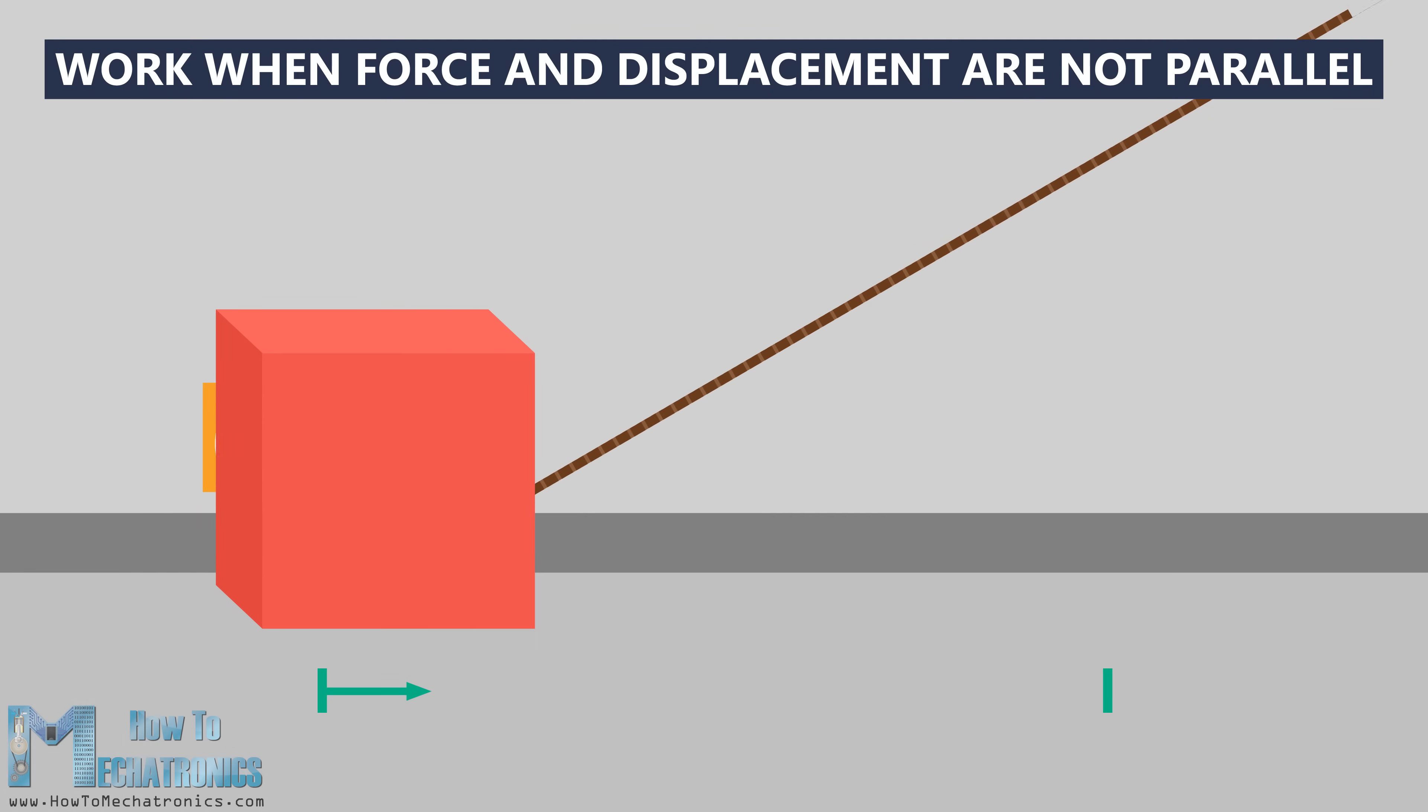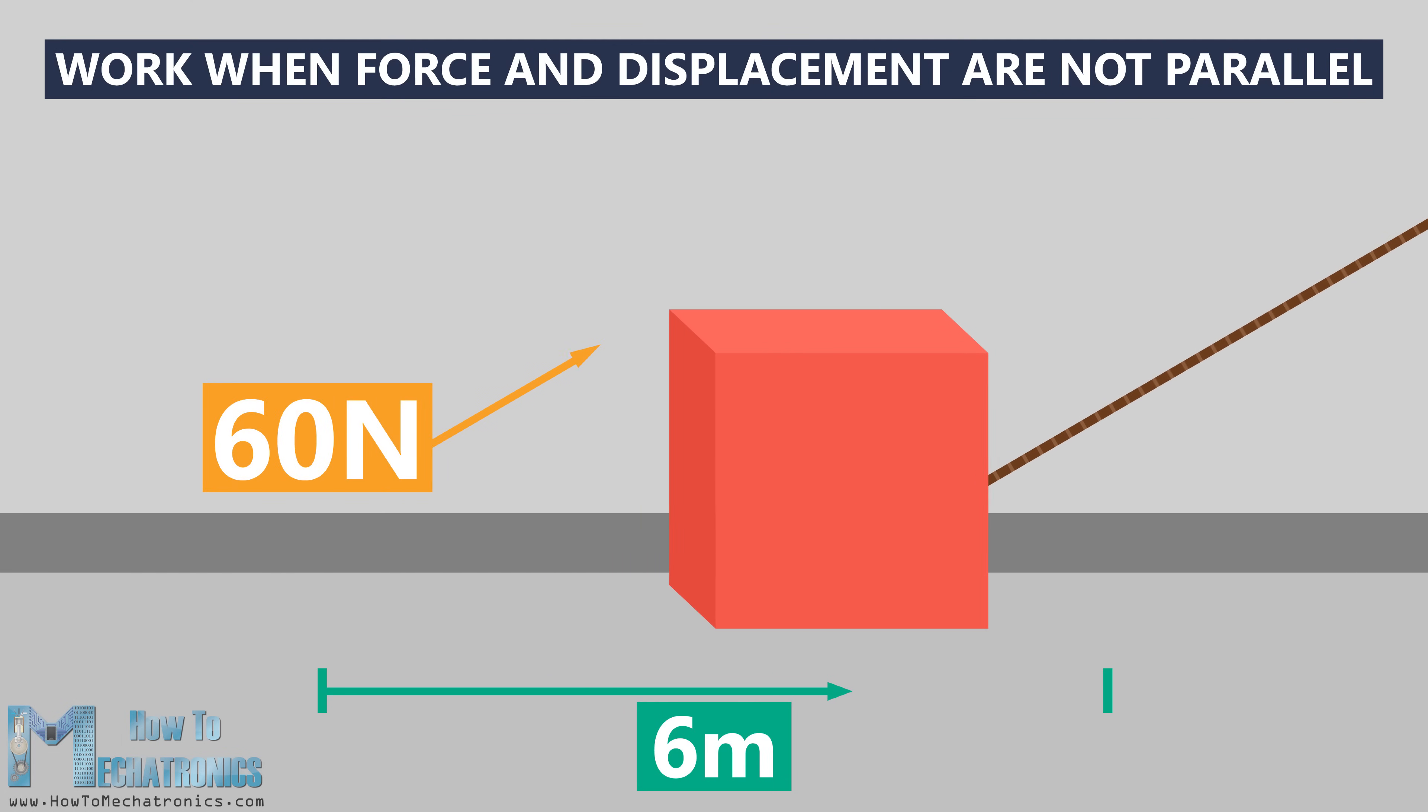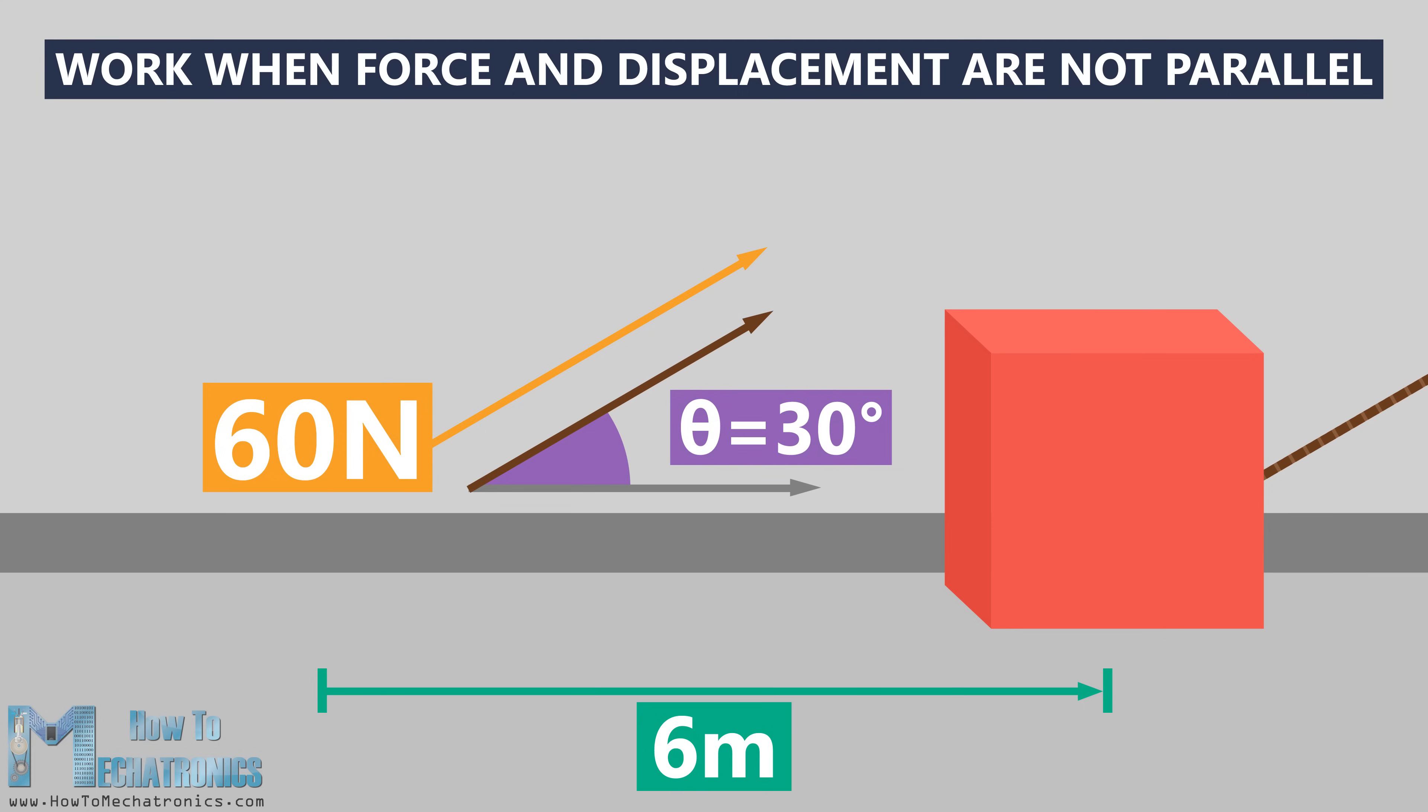In the second scenario, you are pulling the box at 6 meter distance with a constant force of 60 N, but now you are pulling it at an angle of 30 degrees and the box moves parallel to the surface. So the force you apply to the box is not in the same direction as the direction in which the box is moving. In that case, only the components of the applied force that are parallel to the displacement are part of the work done on the box.